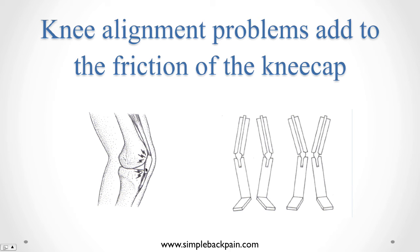The other way we get alignment problems is being bow-legged or knock-kneed, so that the kneecap has to literally track around the corner as it slides up and down when you bend and straighten the knee. That is the main cause of knee problems.